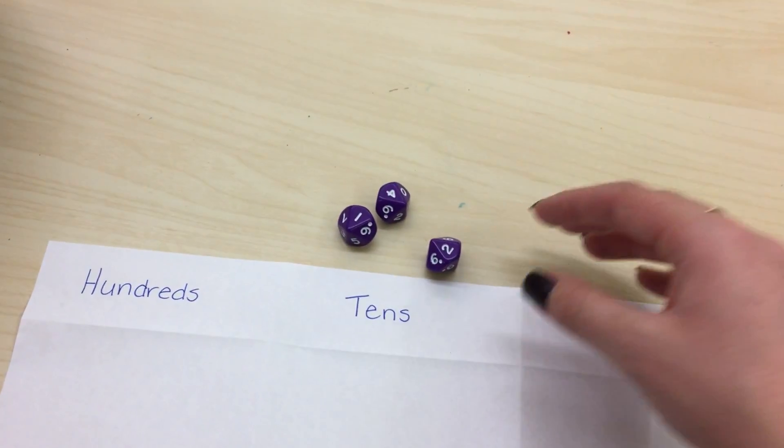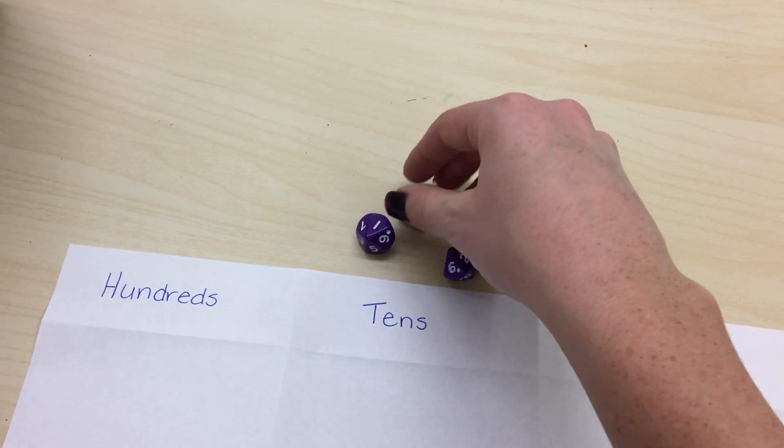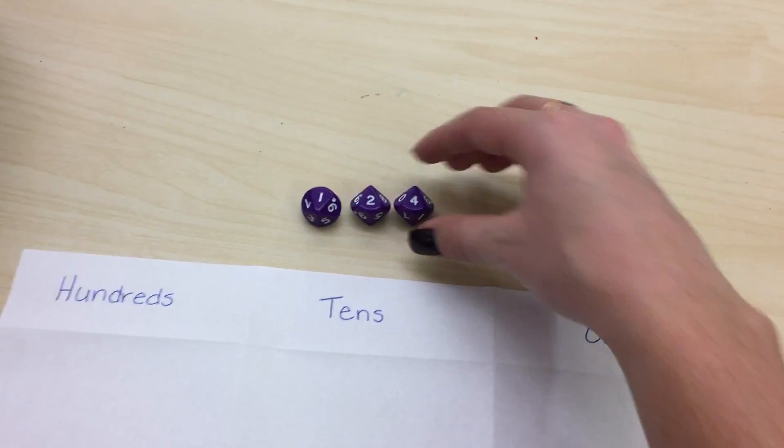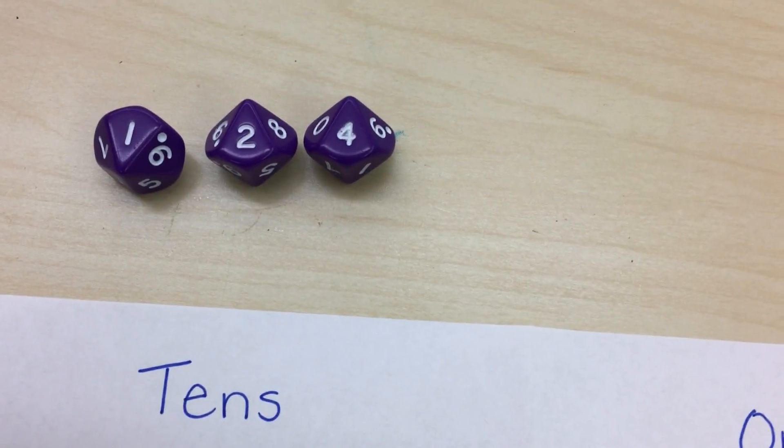First I'm going to roll my dice. Then I'm going to see that I can build a three-digit number. I can build the number 124.